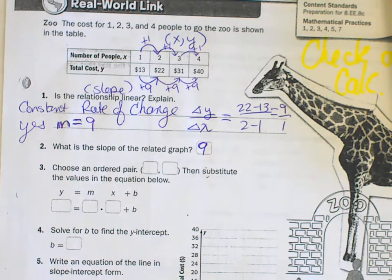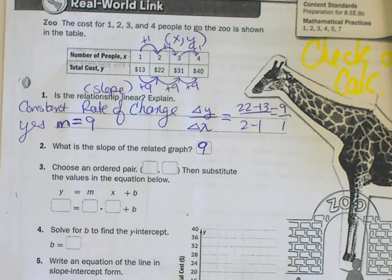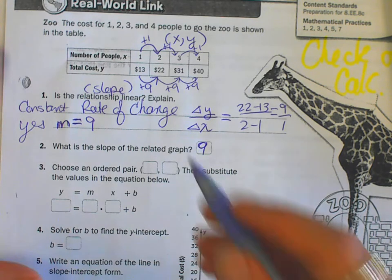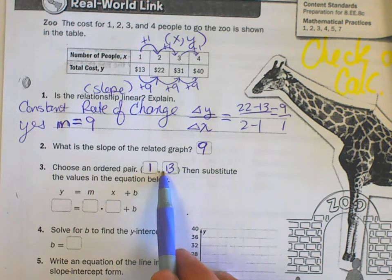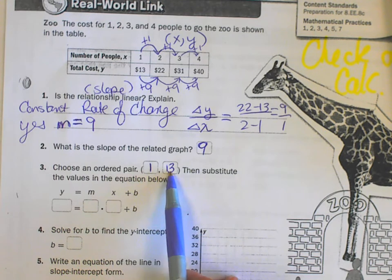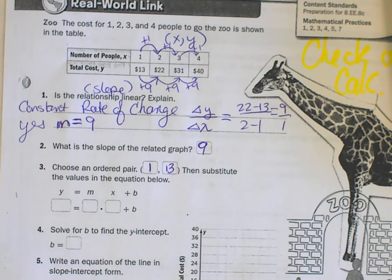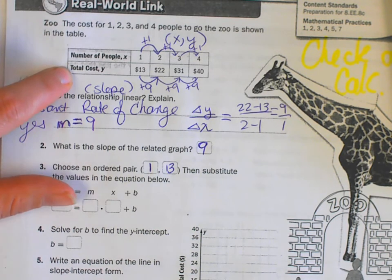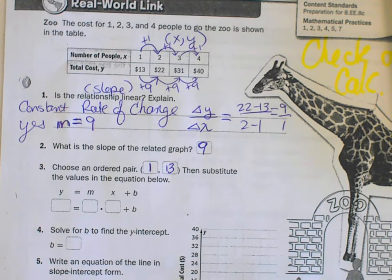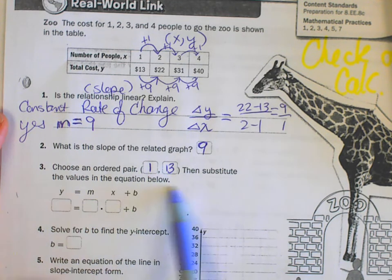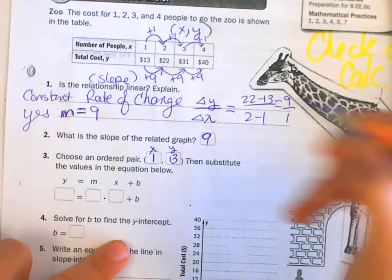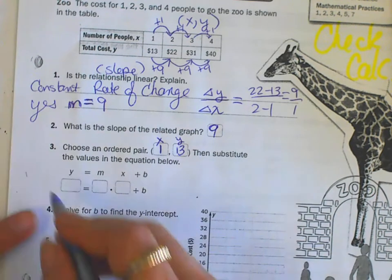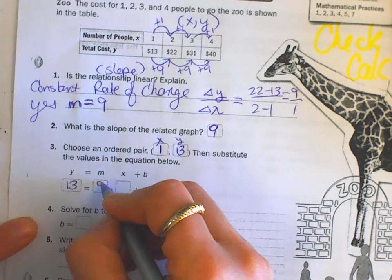Choose an ordered pair. Choose a point. And then we're going to substitute it in the equation. It does not matter what point you choose because every point is on the line. So I'm going to choose the one with the number 1. 1, 13. X before Y, alphabetical order. Independent, dependent. The cost depends on the people. People are independent. The cost depends on how many people because we're talking about going to the zoo. So now we're going to substitute in values. And we know a Y. It's right here. We know an X. It's right there. We know an M. It's right there. So where there's Y, I'm going to put 13. The slope was 9. And the X coordinate was 1.